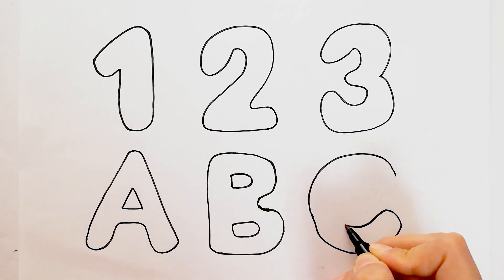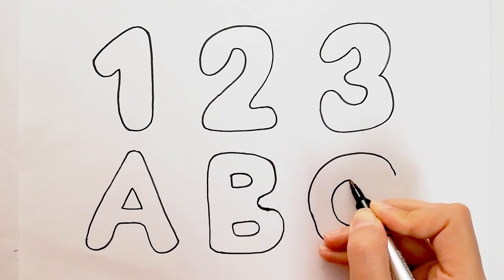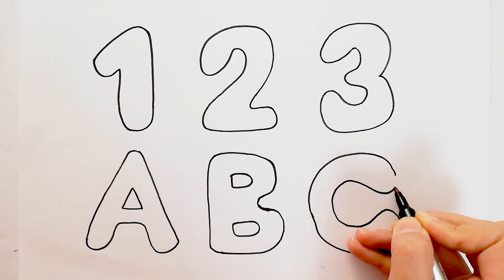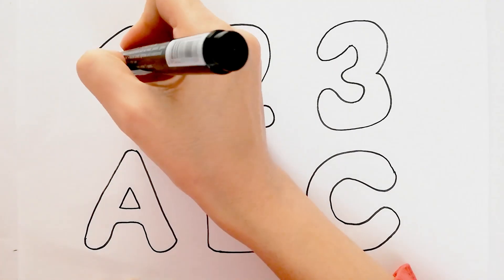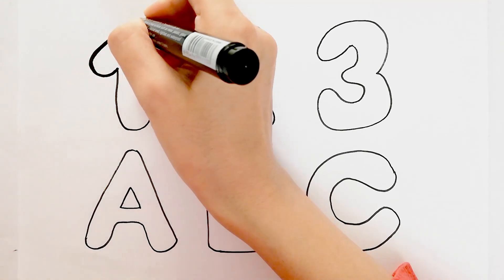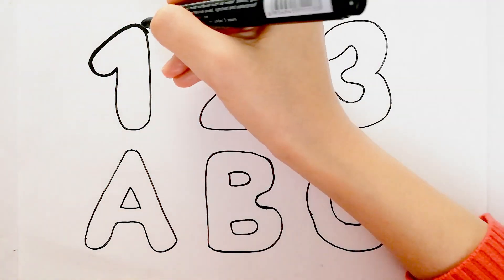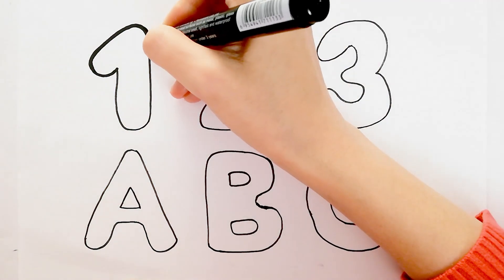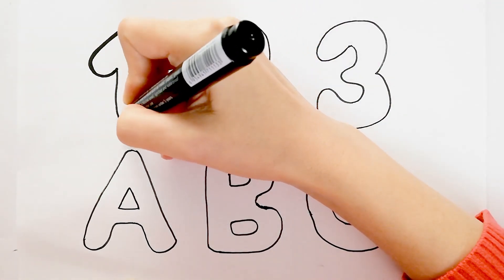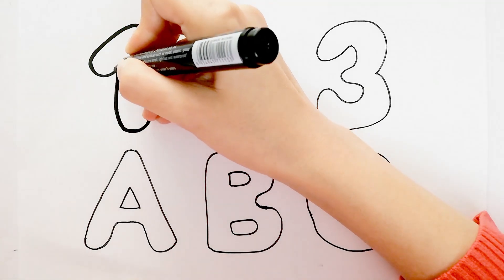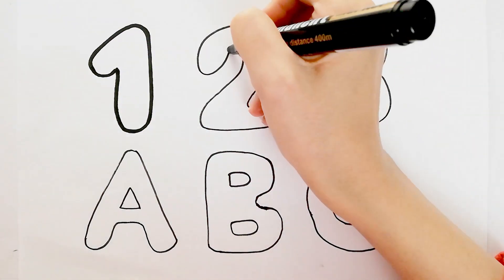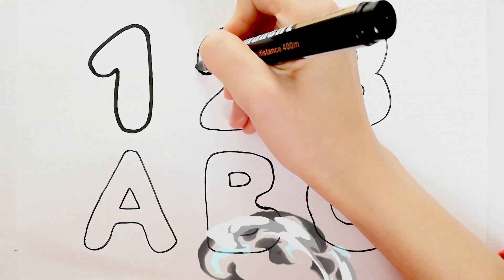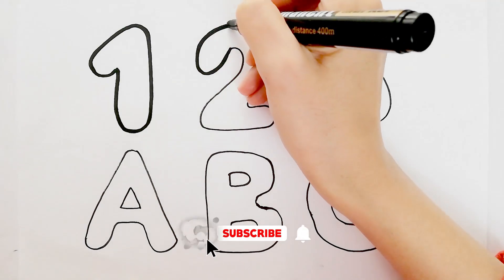A, B, C, D, E, F, G, H, I, J, K, L, M, N, O, P, Q, R, S, T, U, V, W, X, Y, and Z. Now I know my ABCs, next time won't you sing with me?